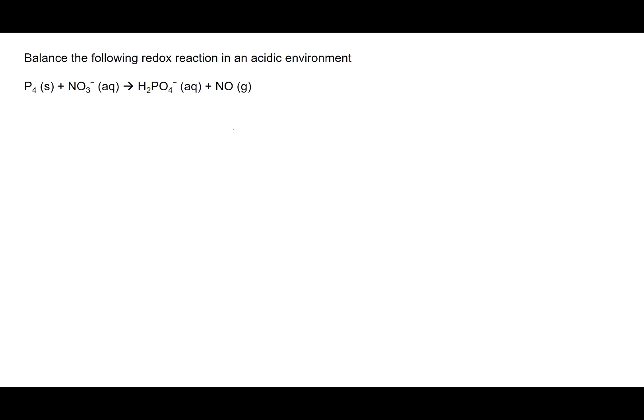In this video, I'm going to go over balancing a redox reaction in an acidic environment. The reaction we have is elemental phosphorus, P4, plus the nitrate ion, NO3⁻, forming H2PO4⁻ and NO gas.